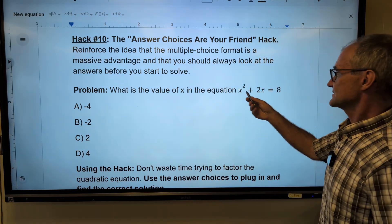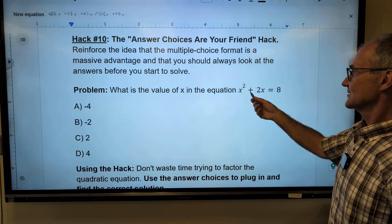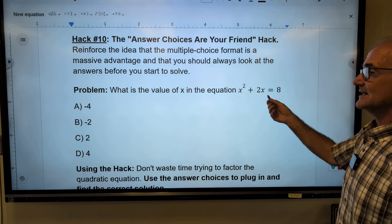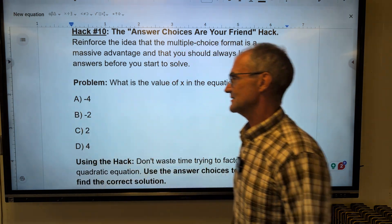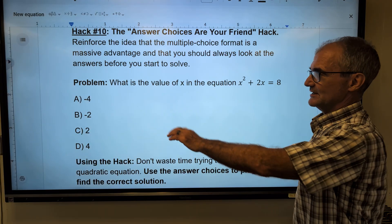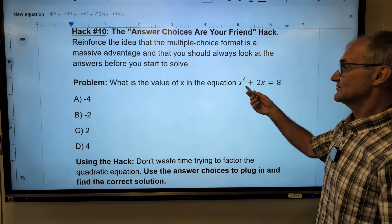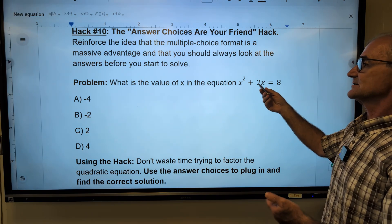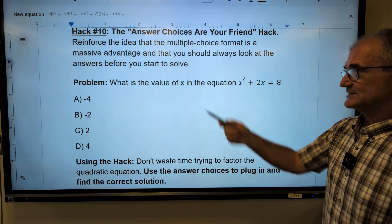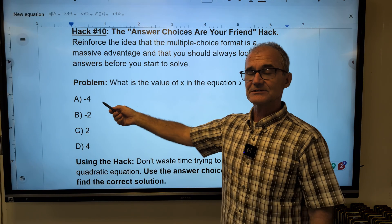Negative four squared is 16, plus negative eight is eight. First one actually worked. So the correct answer is answer A right there. I'll try negative two to show you it won't work. Negative two squared is four. Four minus four is not eight. That one does not work. So the only one that works is negative four.